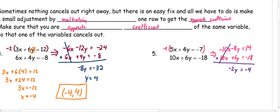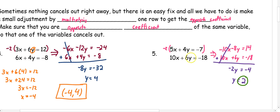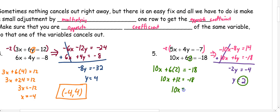I can divide by negative 2, and I get y is positive 2. Once I know that y is positive 2, I need to substitute back in. I'll take the second equation and put 2 in for y. 10x plus 6 times 2 equals negative 18, so 10x plus 12 equals negative 18. I can subtract 12 from both sides, so 10x equals negative 30. Divide by 10, and x is negative 3. So we get the ordered pair (negative 3, 2).